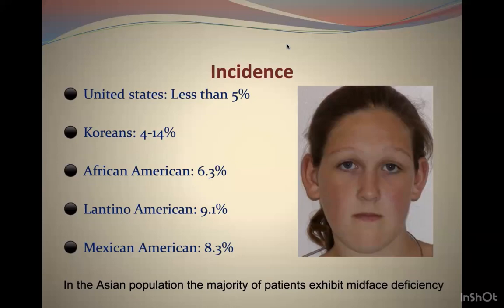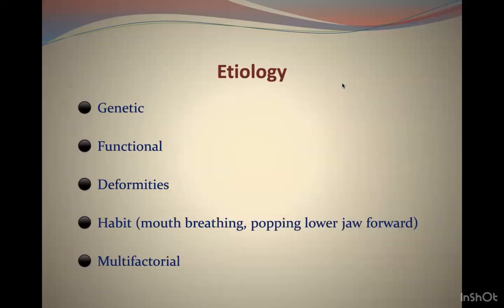Asians found with Class 3 usually exhibit mid-facial deficiency, which makes them easier to treat. The causes of Class 3 malocclusion are multifactorial — it could be genetic predisposition running in the family, habits, functional reasons like CO-CR discrepancy, childhood trauma, and deformities in the condylar region.